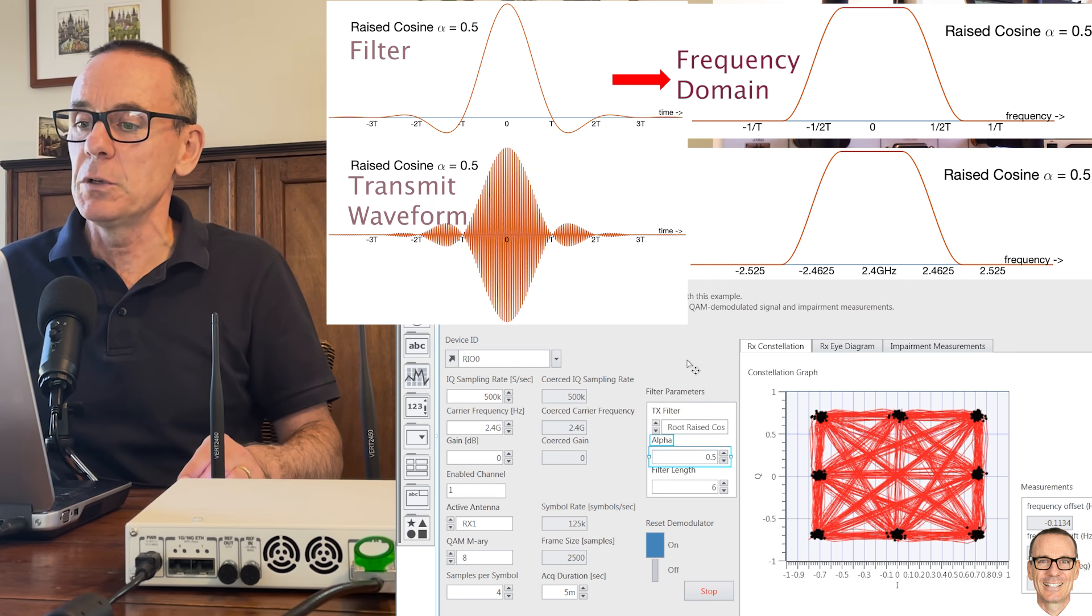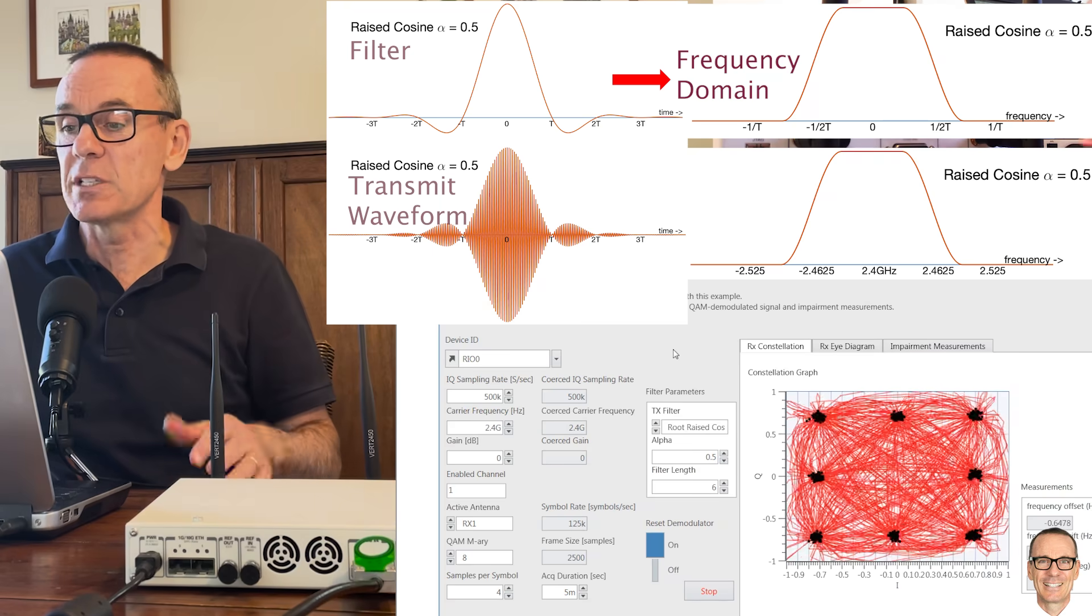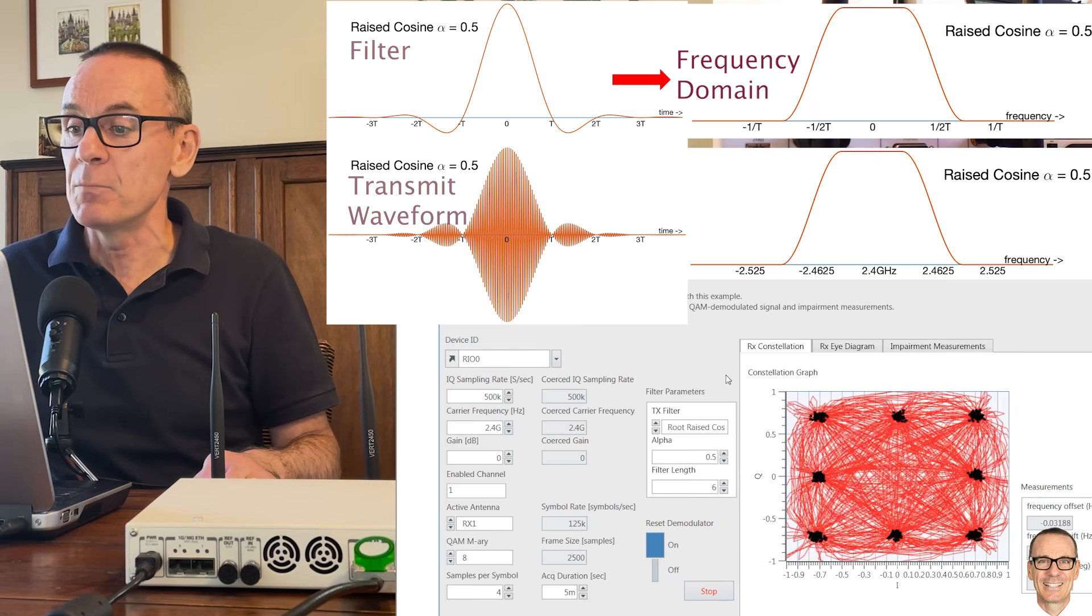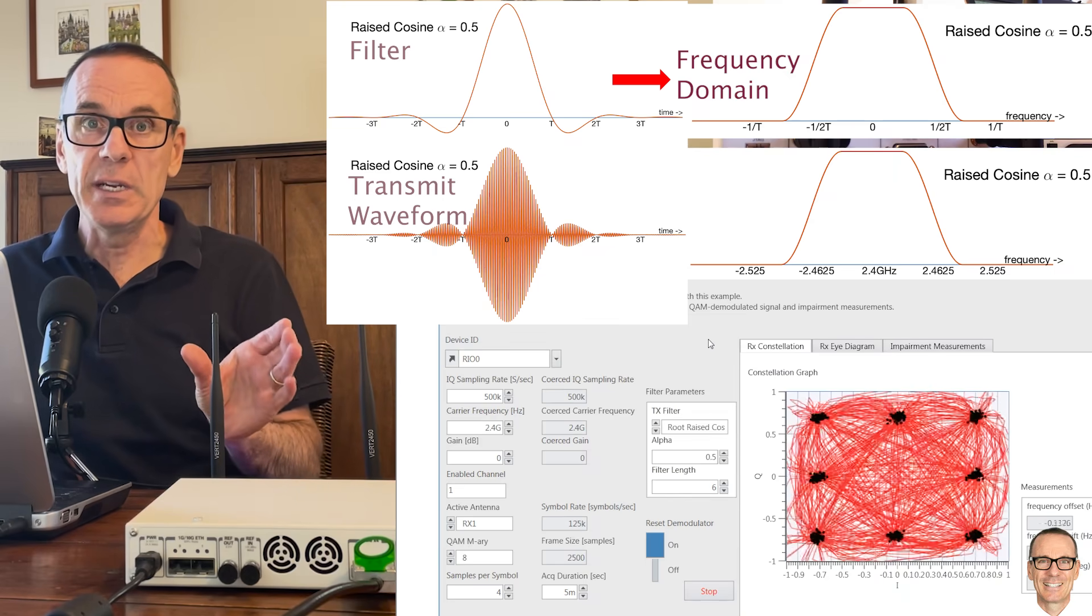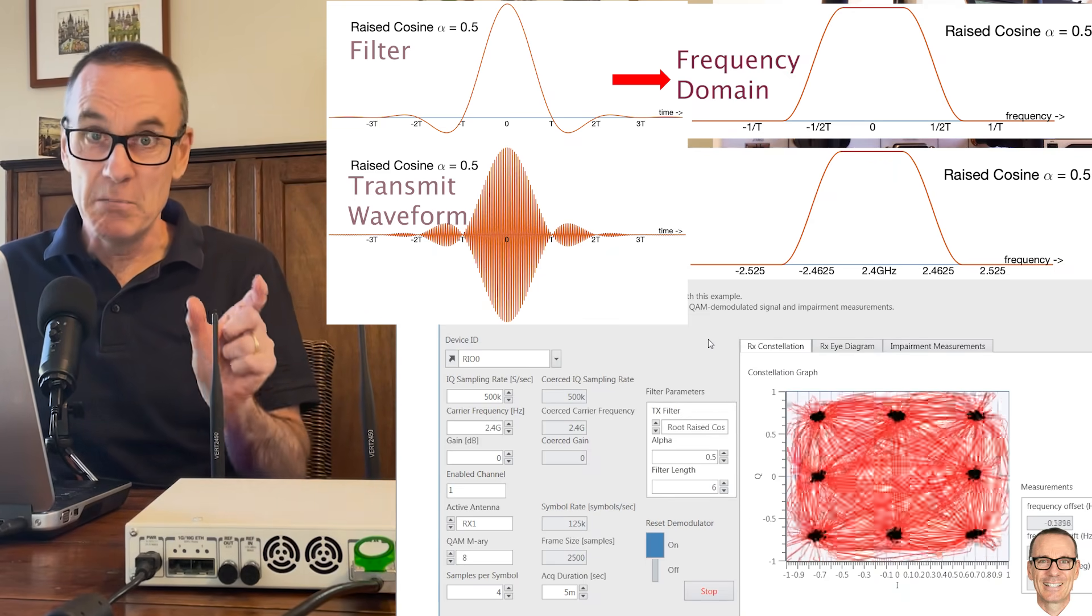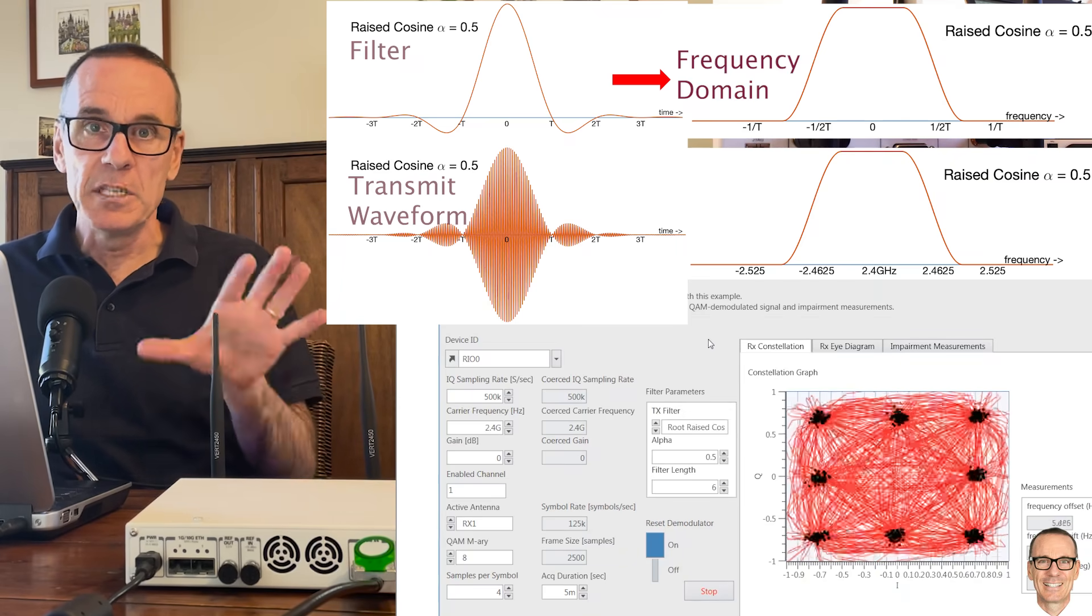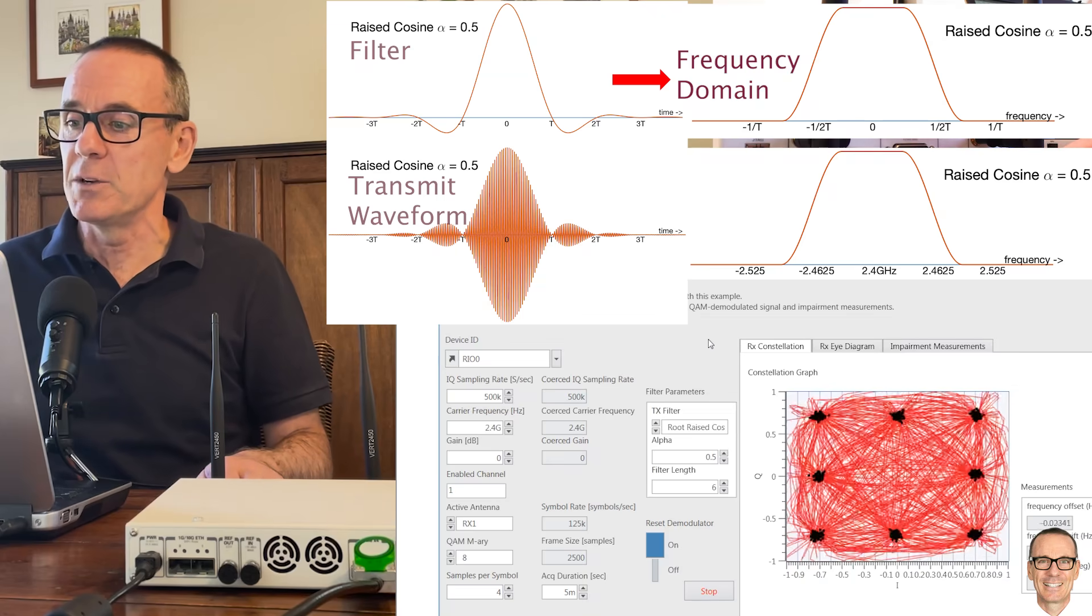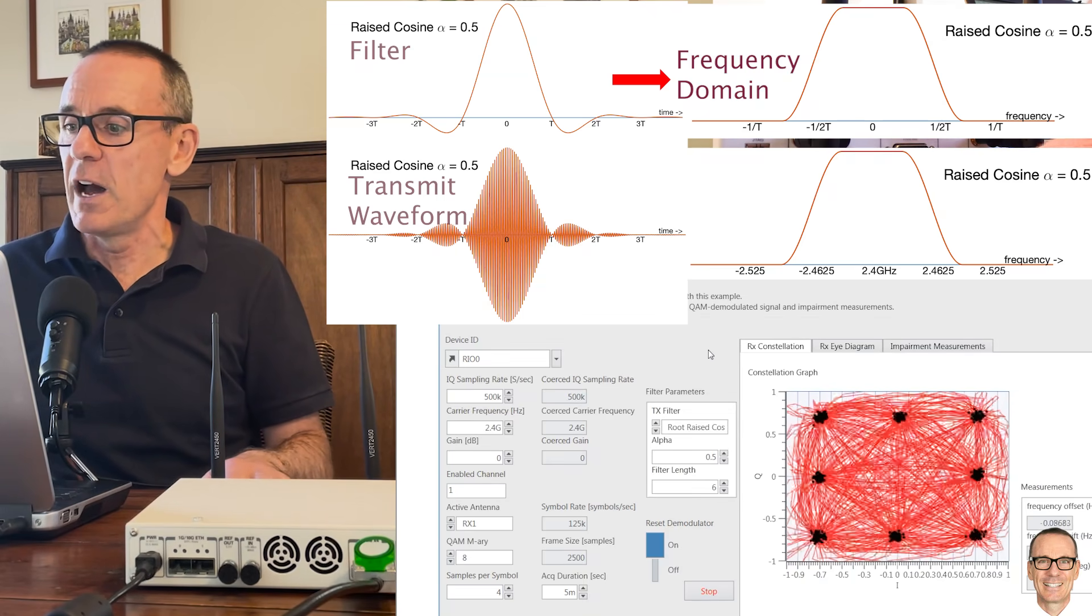So we've set the receive filter to be 0.5 as well to match it and let's run that and we'll see what the constellation looks like. And here we have the receive constellation for 8QAM when we use alpha 0.5. So as I said this is a trade-off between 0 and 1: zero where you're using the minimum amount of bandwidth but you're having lots of errors, and one where you didn't have any errors but you're using twice the minimum bandwidth. In this case we've got a roll-off factor of 0.5 and it's a good compromise.